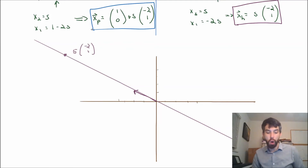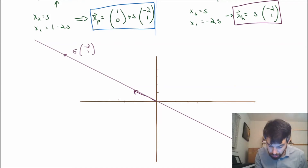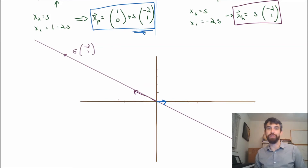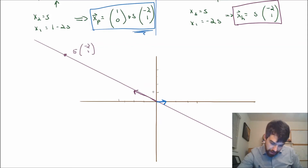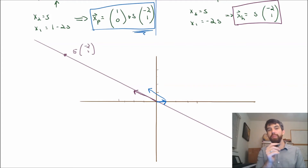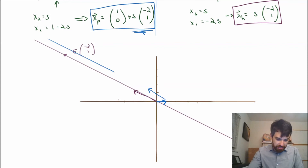Now let's investigate what happens in the inhomogeneous system, where the b vector was non-zero. We notice that the solution is the sum of two different things: first, the vector (1, 0), which sits right on the horizontal axis. Then I add to this the portion s times (-2, 1). Choosing s = 1, my solution starts at (1, 0) and then goes 2 to the left and up 1. If I choose different values of s, I still have to start at (1, 0), but from that spot I could go any amount along the direction (-2, 1). So I fill in this line right here.